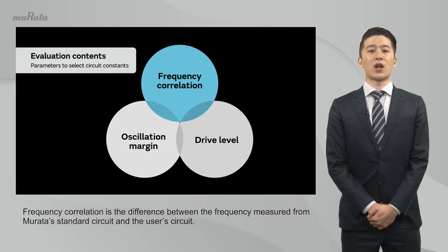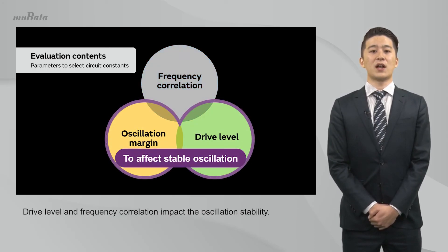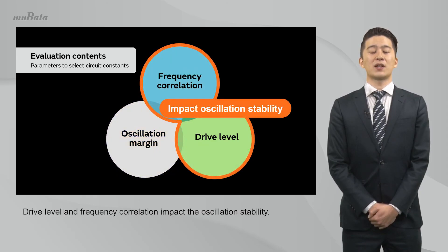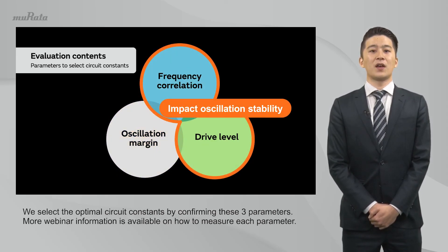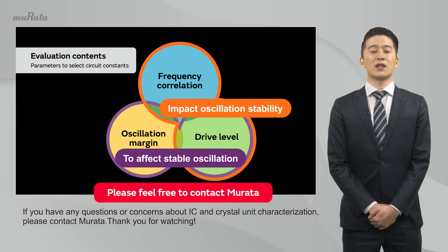Frequency correlation is the difference between the frequency measured from Murata's standard circuit and the user's circuit. The oscillation margin and the drive level are the key parameters to affect stable oscillation. Drive level and frequency correlation impact the oscillation stability. We select the optimal circuit constants by confirming these three parameters. More webinar information is available on how to measure each parameter. If you have any questions or concerns about IC and crystal unit characterization, please contact Murata. Thank you for watching.